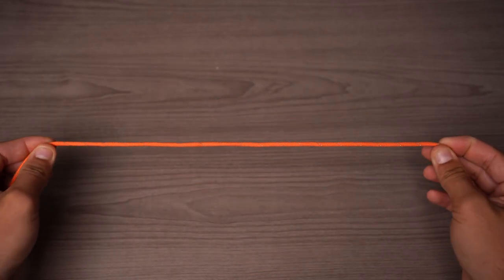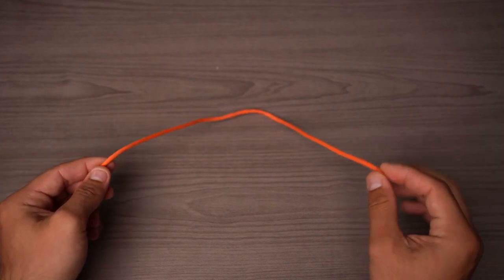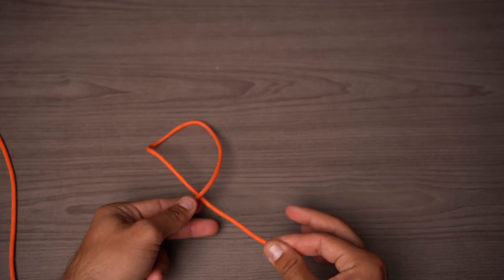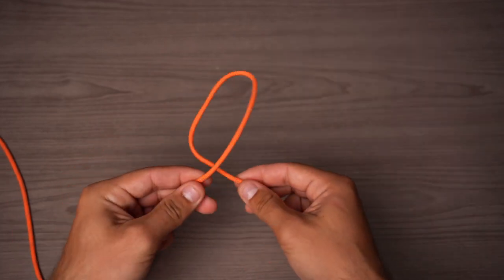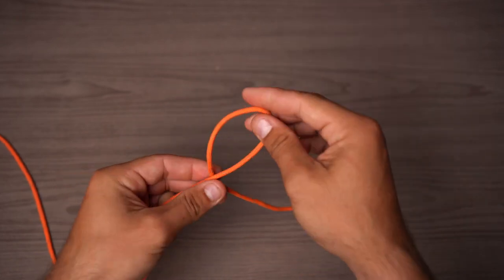First thing we're going to do is take our paracord, about 12 inches, and pointing our tag end or pointing our thumb finger. If you just make a snapping motion, it'll naturally want to form a loop, and the main thing about this is having this tag end behind your main line.